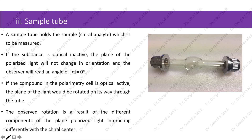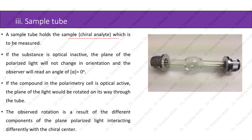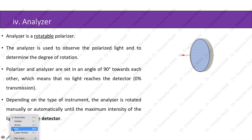The sample tube holds the chiral analyte to be measured. If the substance is optically inactive, the plane of polarized light will not change in orientation and the observer will read an angle of zero degrees. If the compound is optically active, the plane of light rotates as it travels through the tube. The observed rotation results from the different components of plane polarized light interacting differently with the chiral center.